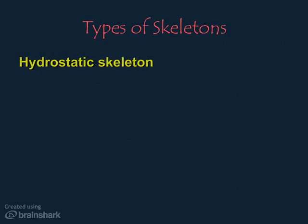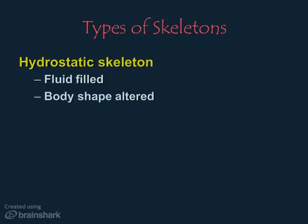Animals with a hydrostatic skeleton appear to have no skeleton at all, but nothing is further from the truth. Hydrostatic skeletons are fluid-filled, and the body is shaped or altered by contractile cells that act very much like muscles.